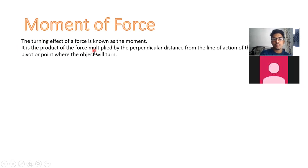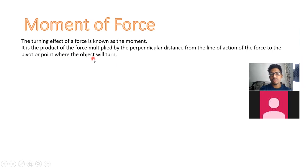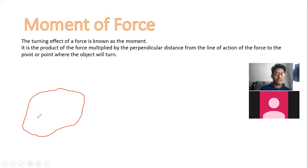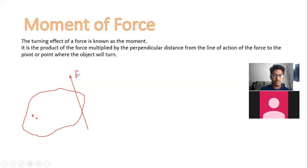It is the product of the force multiplied by the perpendicular distance from the line of action of the force to the pivot point where the object will turn. For example, if I take an object like this, let's say there is a pivot point. I call that point O and let's apply a force.